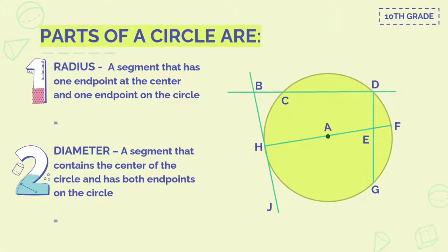Parts of the circle — first, we have the radius. Radius is a segment that has one endpoint at the center and one endpoint on the circle. So what do you think are the radii here? First, line segment AH and line segment AF.